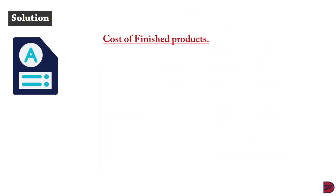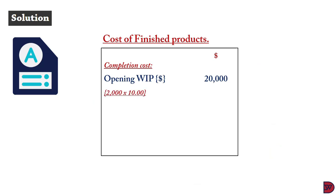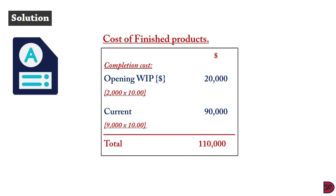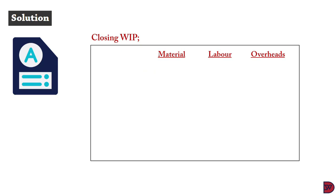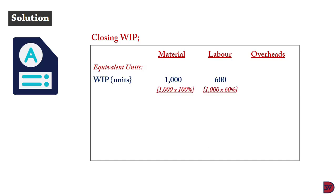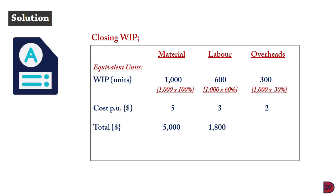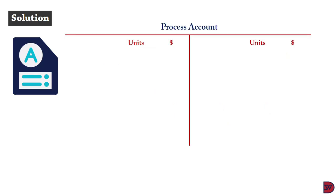For the cost of finished goods, the opening WIP of 2,000 units is valued at $20,000 (2,000 × $10). Under the weighted average method, the opening WIP equivalent units are not separately prorated as in FIFO. The current period cost for 9,000 units at $10 is $90,000, giving a total finished goods cost of $110,000. For closing WIP: materials 1,000 units at $5 = $5,000; labor 600 units at $3 = $1,800; overheads 300 units at $2 = $600 — total $7,400.